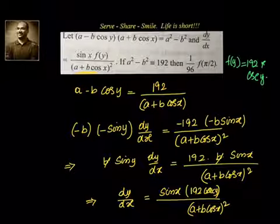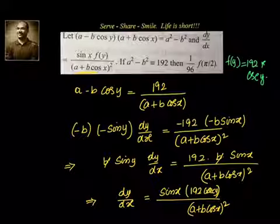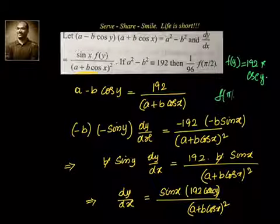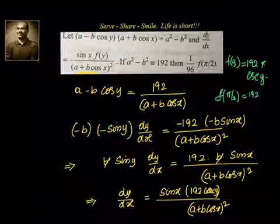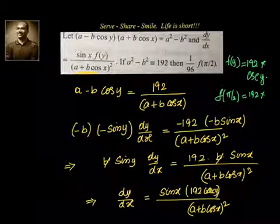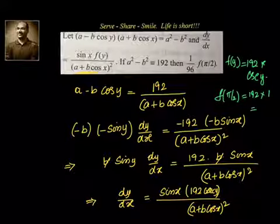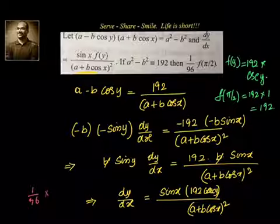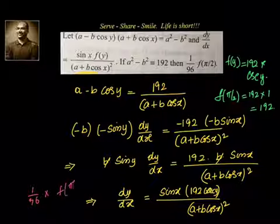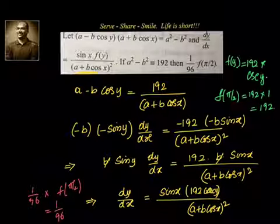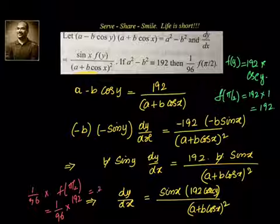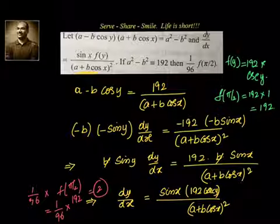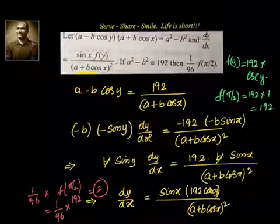Now that we know f(y) = 192 cosec y, this is pretty easy. f(π/2) = 192 · cosec(90°). Sin 90° is 1, so cosec 90° is also 1. Therefore f(π/2) = 192. What we need to find is (1/96) · f(π/2) = 192/96 = 2.